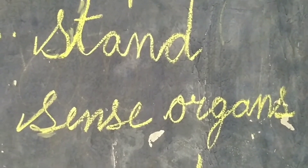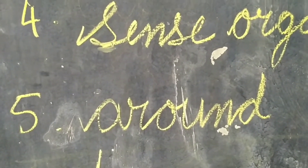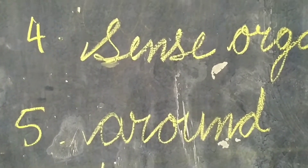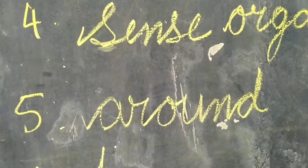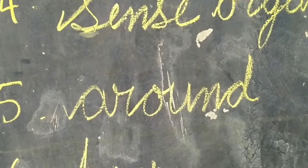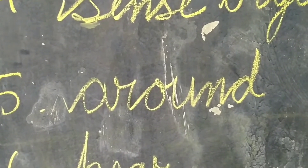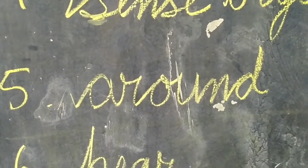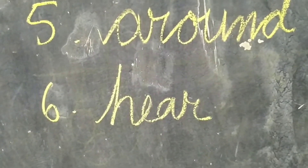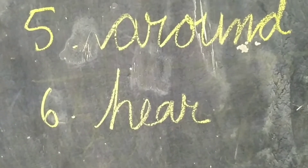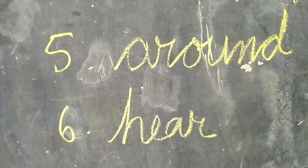Then you will learn the spellings. Fifth one: A-R-O-U-N-D. Around. When you say and write, you will avoid spelling mistakes. So properly and correctly you can write the spellings. Sixth one: H-E-A-R. Hear.